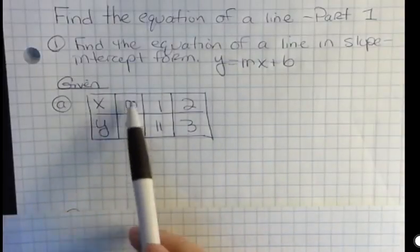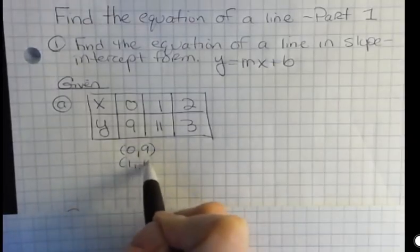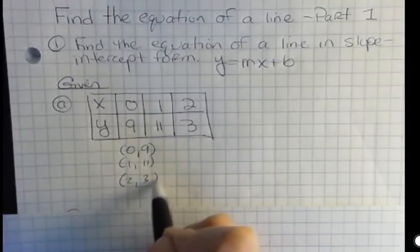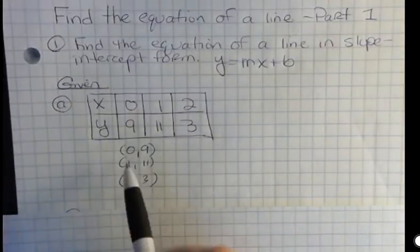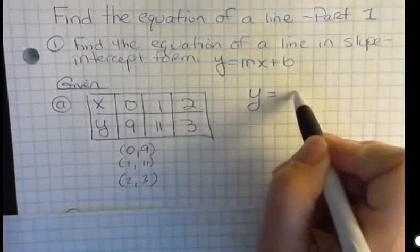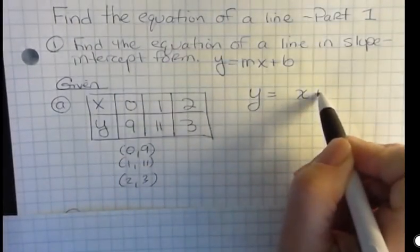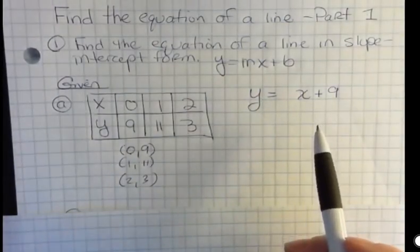When I write these ordered pairs as ordered pairs, you can see that the first ordered pair is the y-intercept. The y-intercept is when x is zero. So if I was going to write this, I already know almost everything I need. I know the y-intercept is nine. What I don't know is what the slope is.